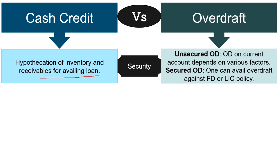In case of an unsecured overdraft there is no requirement for security, as the limit will be purely based on the average balance maintained by the customer, his credit history, and past relationship with the bank. However, secured overdrafts are provided against self-liquidating investments such as fixed deposits, LIC policies, UTI units, etc.